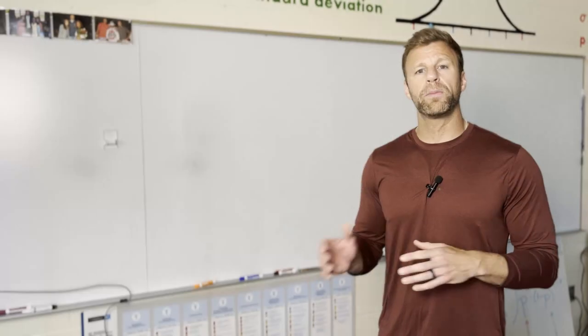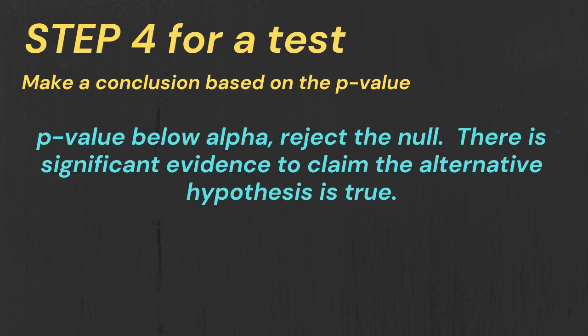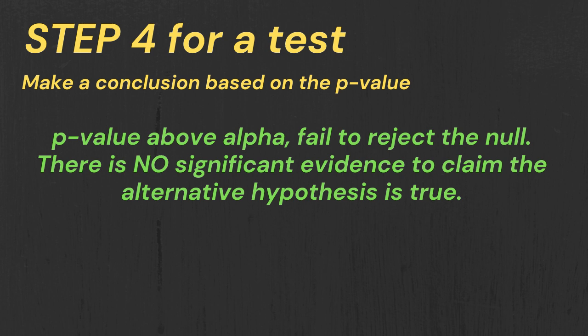Finally, you have to make your conclusion. If your p-value is below your significance level, well below one or five percent, you're going to reject the null, which means you do have statistically significant evidence to go with the alternative. If your p-value is above your alpha level, above one, above five percent, that's when you fail to reject the null, which means you do not have enough evidence to go with the alternative.